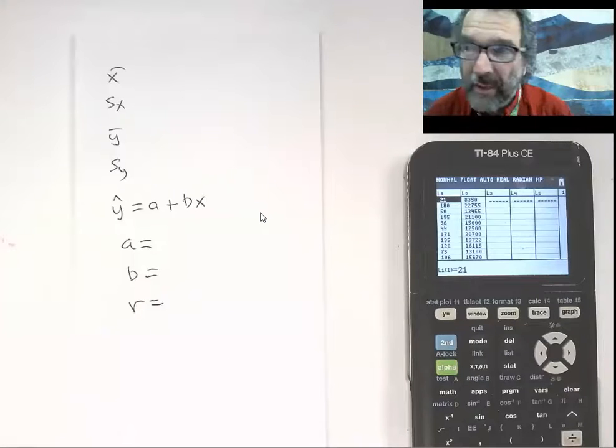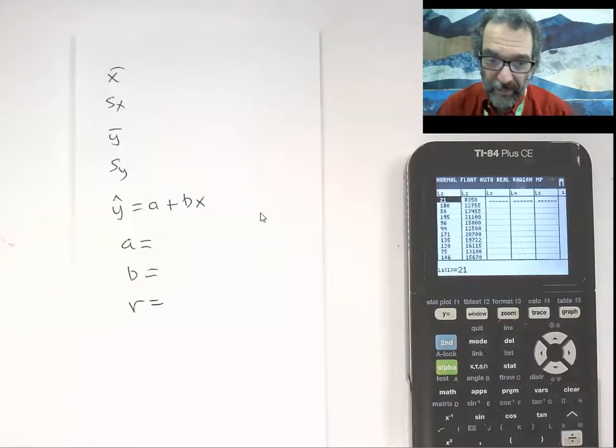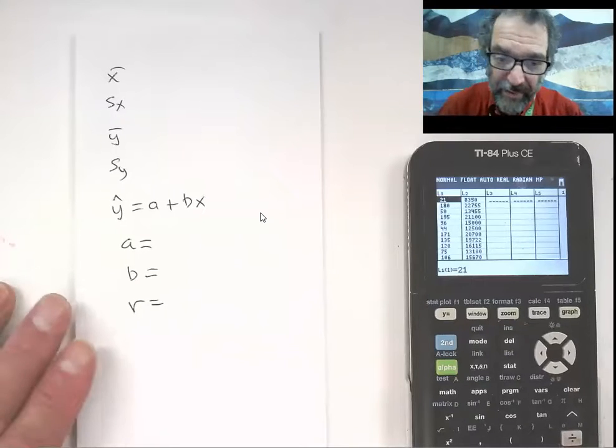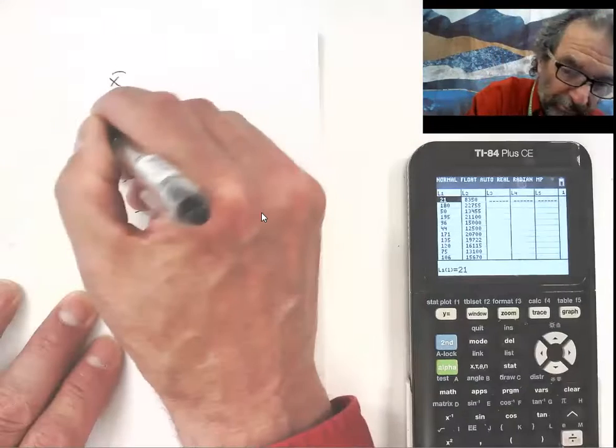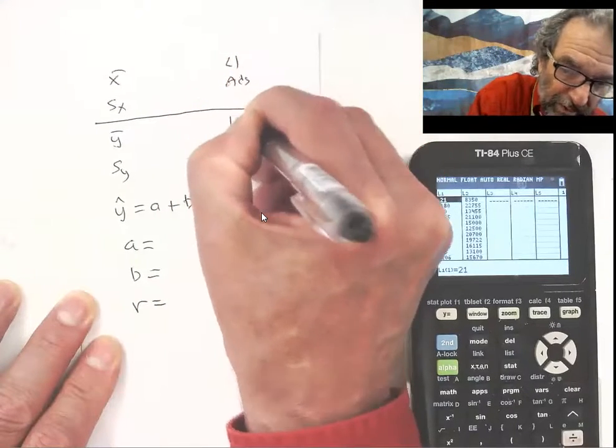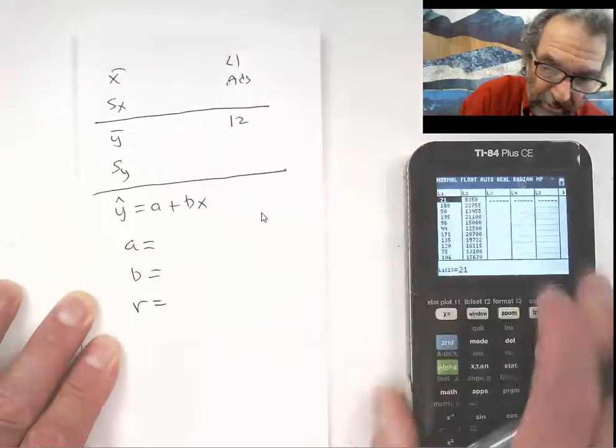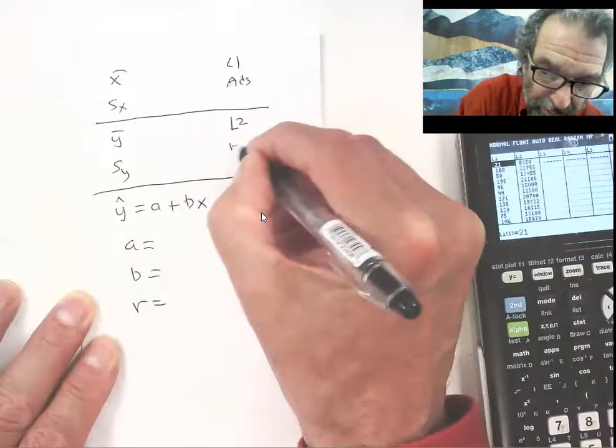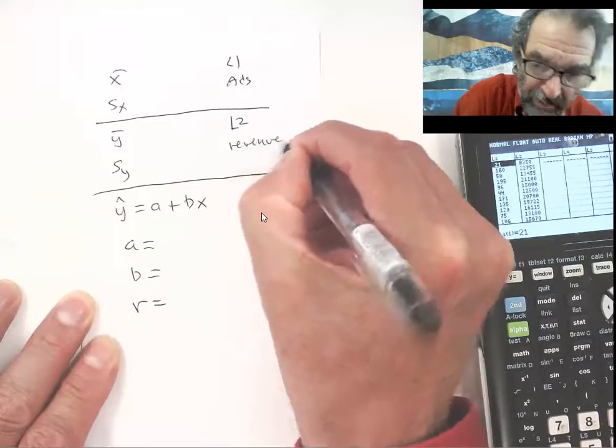So on the left hand side I've got L1 is ads. And L2 is revenue like that.